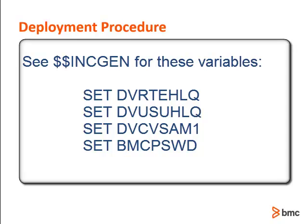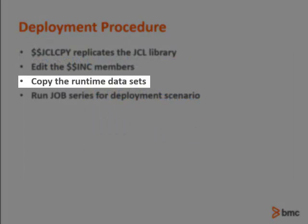Set DVUSUHLQ. Set DVCBSAM1. Set BMCPSWD. Use these high level qualifiers to obtain a list of all the datasets needed. The SMPE datasets will not need to be transported over unless you want to maintain a separate SMPE environment on the new system. If the datasets need to be copied to another system but require different high level qualifiers, you can either change the names through your own process or run the $200 series jobs to create the new runtime datasets and copy those to the new system.